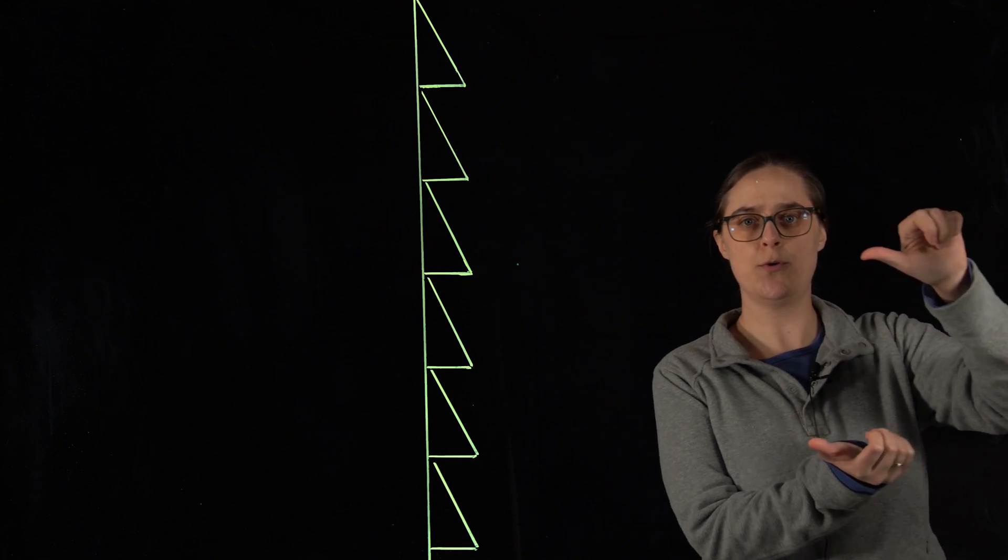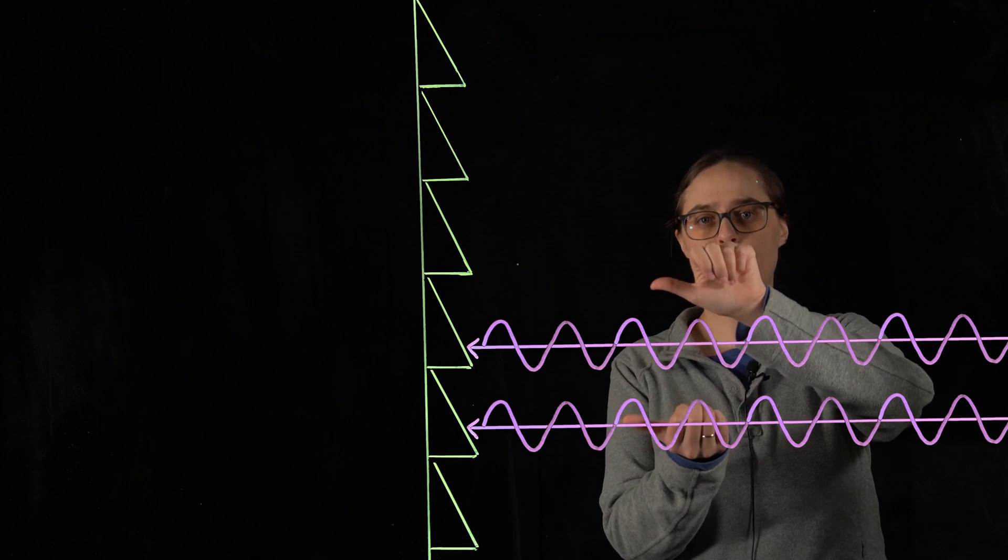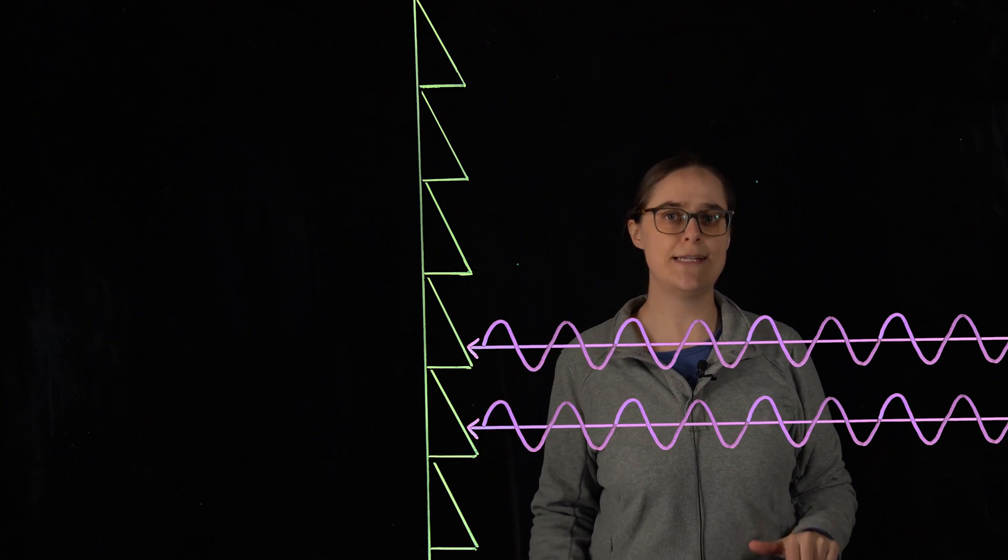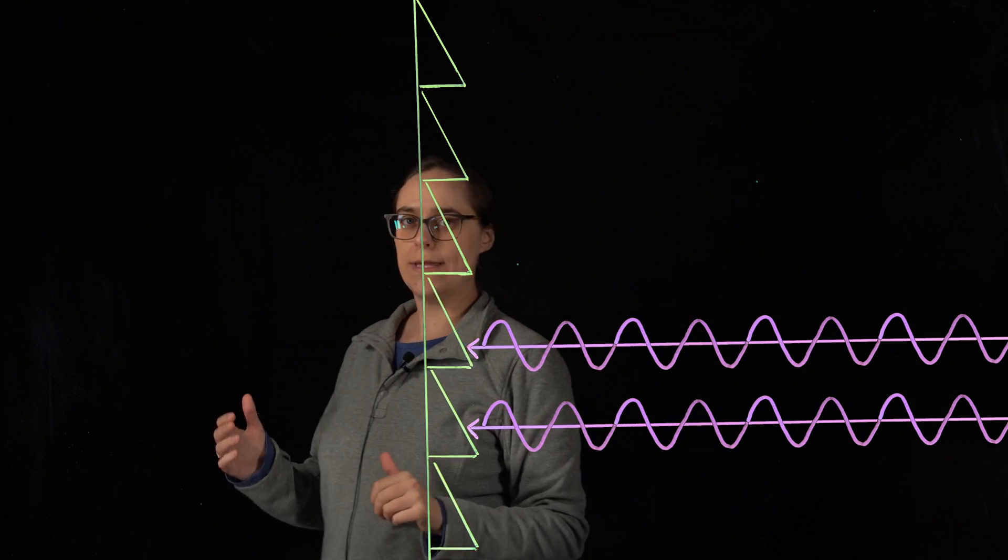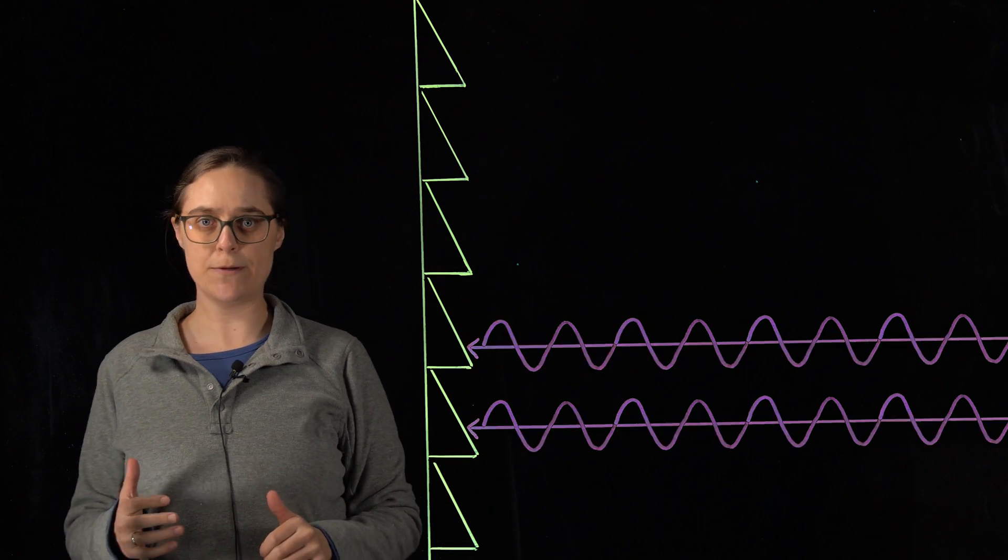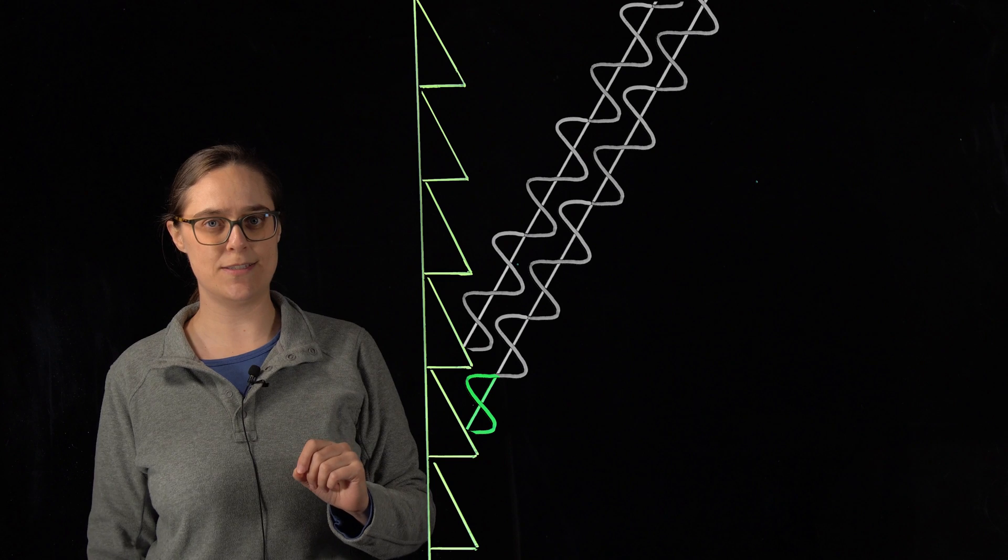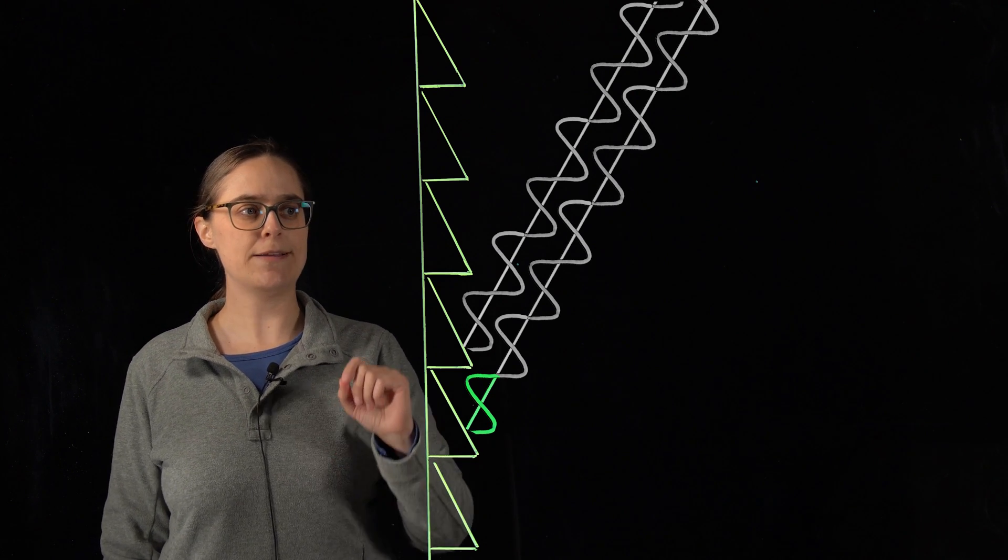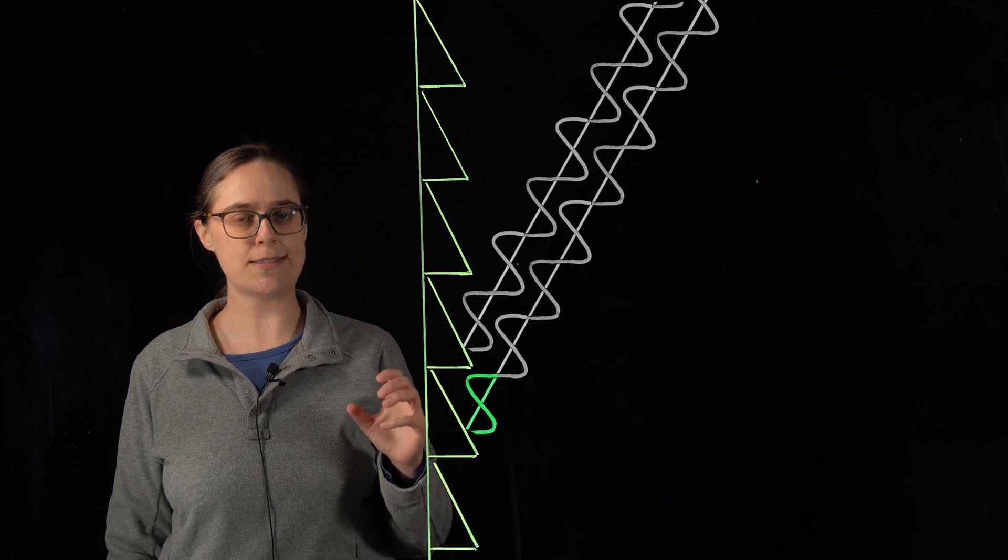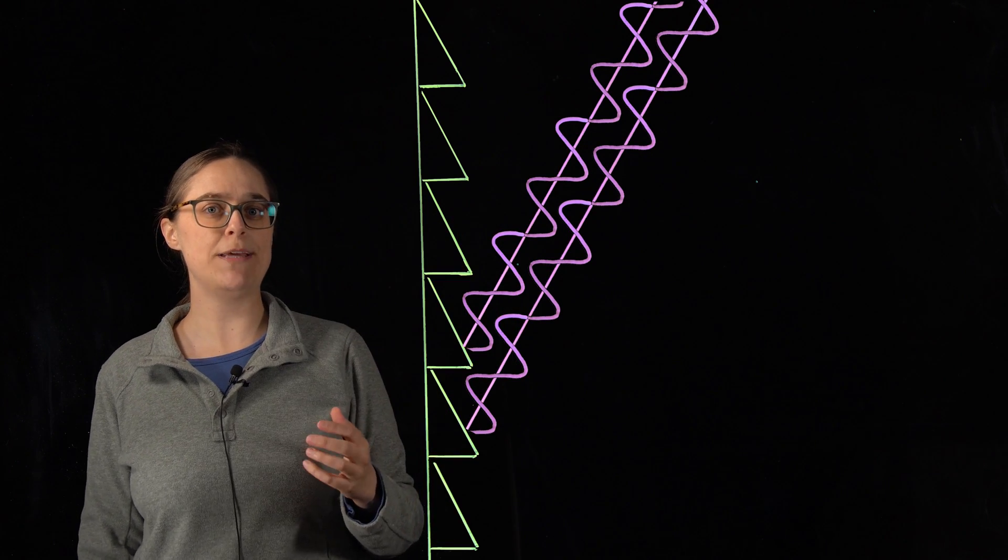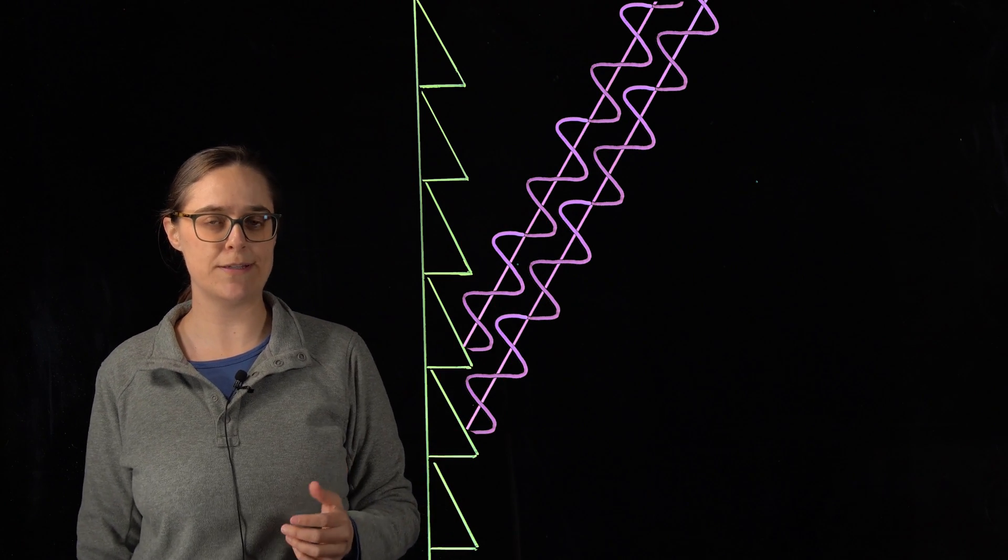Now think about what would happen if you had two light waves coming in, currently constructively interfering, but they hit neighboring mirrors. When they reflect off the neighboring mirrors, they end up traveling a slightly different distance than each other. If that difference in distance is a whole number of wavelengths, these are still going to be constructively interfering, and this color can continue on and be reflected.